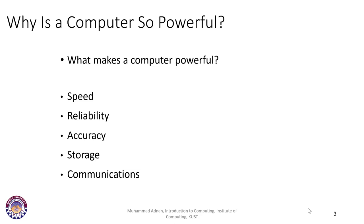In the previous class we discussed why computers are so powerful. There are some fundamental features that make a computer system powerful. First is speed — if you want to do a lot of work that could take millions of people hundreds of years, a computer will do it within a few seconds or even less. That is how speed is a great feature that makes computer systems powerful — a lot of data is processed and communicated.